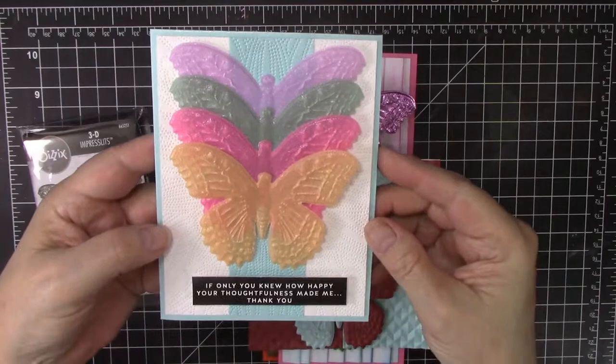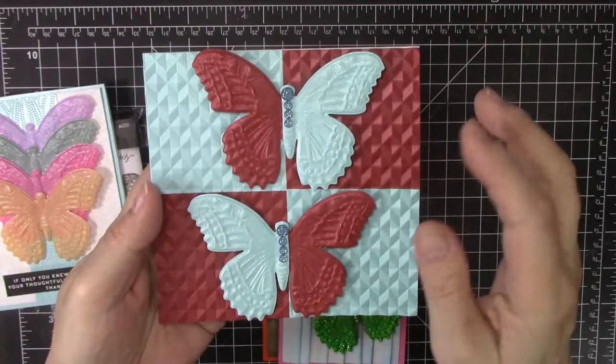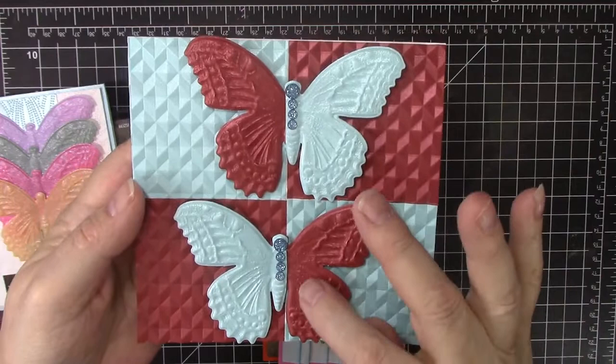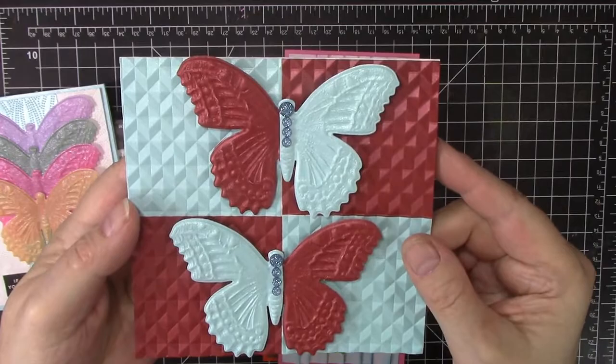Here's another card that I made. I did it in the bronze and the blue over the opposite color on a square card that was embossed. I'm hoping you can see the great detail on those embossed die-cut butterflies.